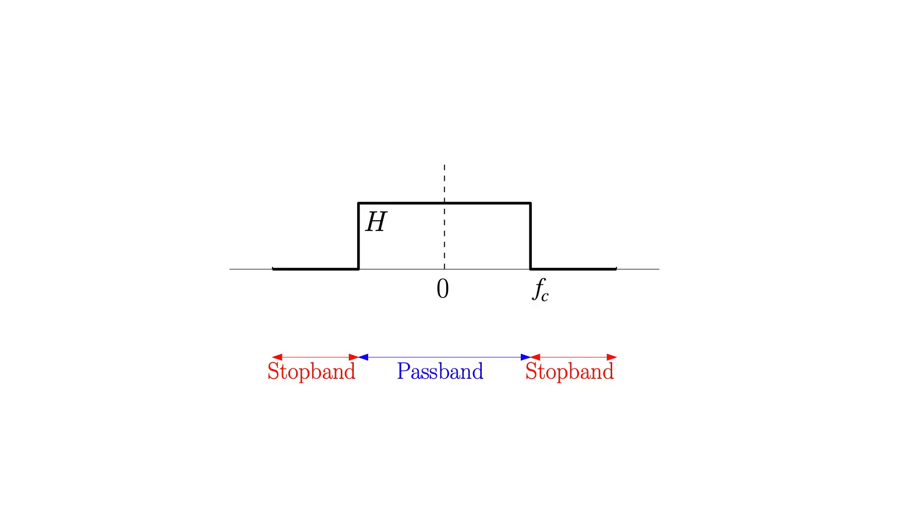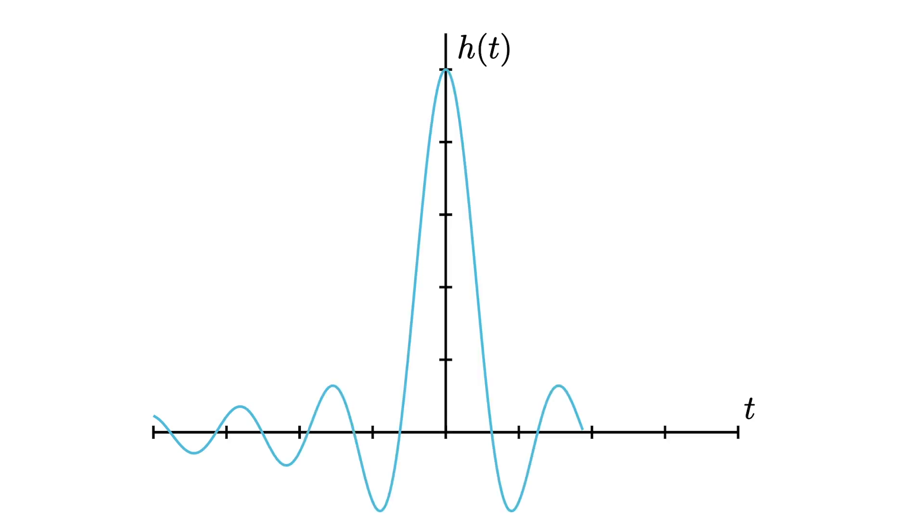So why can we never actually realize this perfect ideal filter? The frequency domain representation looks like a rectangular pulse, but if you take the inverse Fourier transform to look at it in the time domain, you get what's called a sinc function. The problem is that for negative values of time, this is not zero — meaning our filter needs to start responding to inputs that haven't even happened yet. Obviously you can never implement this, so any real filter has to be causal, whereas the ideal filter has a non-causal impulse response.